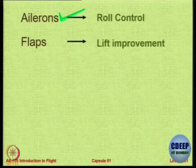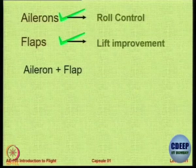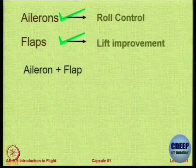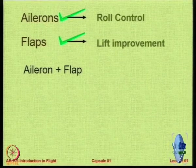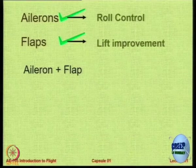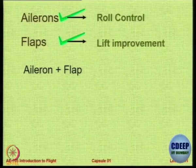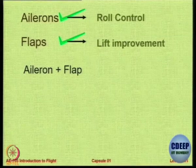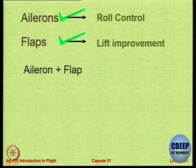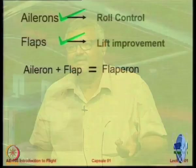Ailerons give roll control, flaps give lift improvement — what about aileron plus flap? That is called a flapperon. When you want to move it like a flap, both flapperons move down; when you want to move it like an aileron, one goes up and one goes down. So you get two functions in one device.